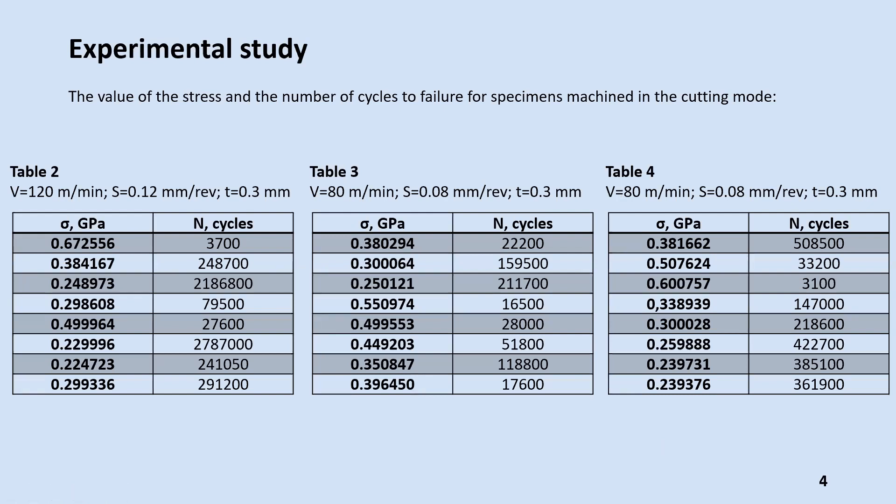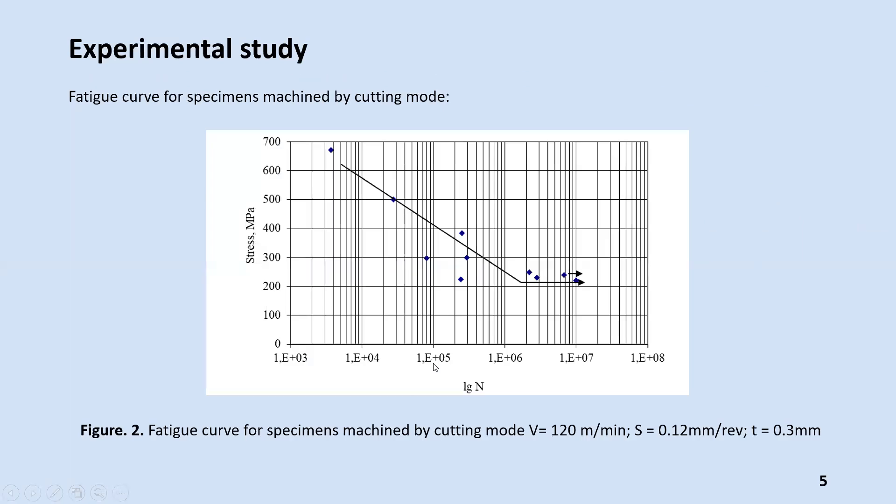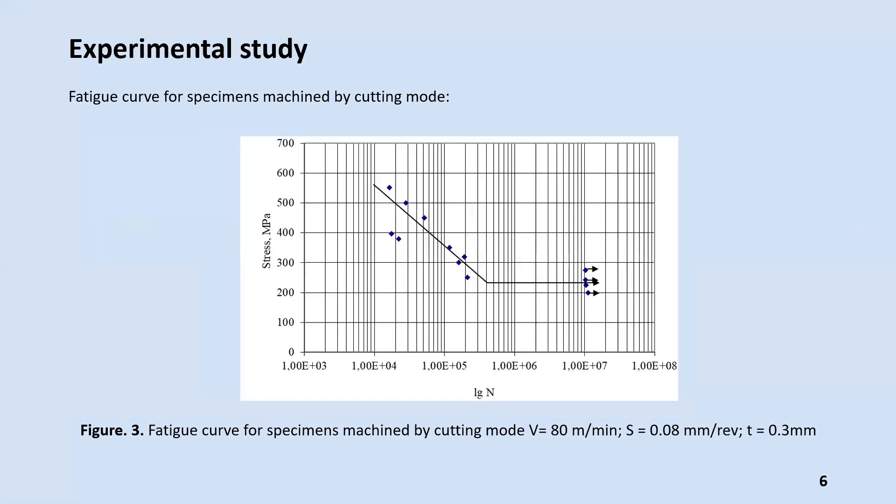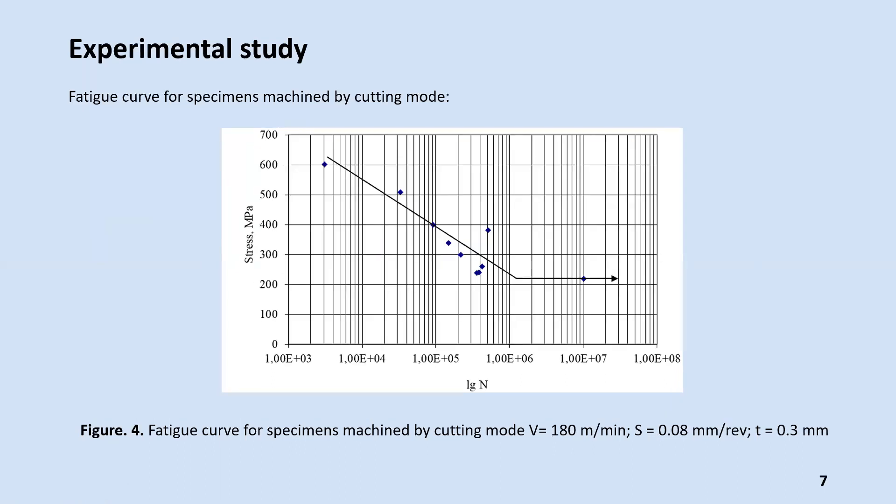The results of experimental studies, especially the values of stress and the number of cycles to failure for machined specimens, are given in Tables 2, 3, and 4. The fatigue curves are shown in Figures 2, 3, and 4.